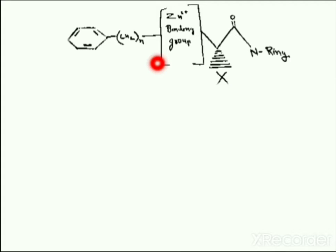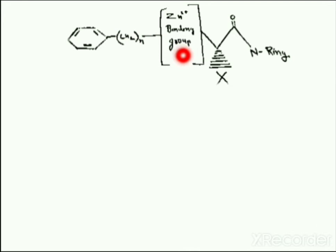Here you can see a basic skeleton which is used in most of the ACE inhibitors. It contains an aromatic ring system, an alkyl chain, a zinc binding group which binds to the zinc 2+ present on the active site of the ACE molecule, an X-substituent, and an N-ring terminal.